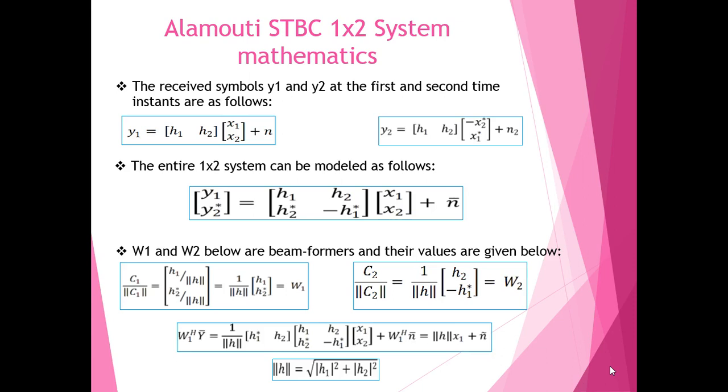In order to decode the symbol for transmission at time instant 1, we multiply W1^H with Ȳ, and after simplification, we get it equal to H̿ × X1 + Ñ. This implies that in the first time instant, the received symbol is decoded and it depends on the symbol transmitted from transmitter 1. Similarly, for the second time instant, the received symbol would be dependent entirely on the symbol transmitted from transmitter 2. The value of H̿ is also given.